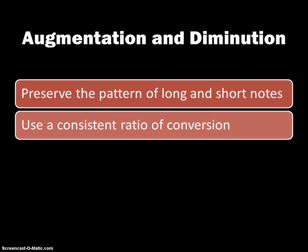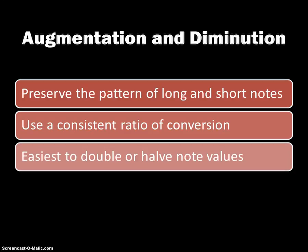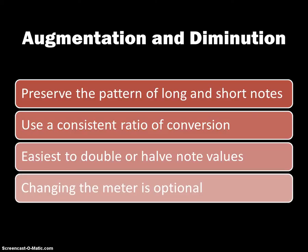To do that, we need to use a consistent ratio of conversion. For our class, it's always going to be either a 1 to 2 ratio or a 2 to 1 ratio. That means we're going to be either doubling the length of each note or cutting each note's value in half. Changing the meter when you do that is optional, and I'll show you a couple examples of how that turns out.